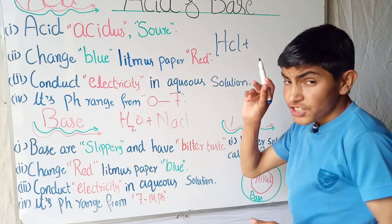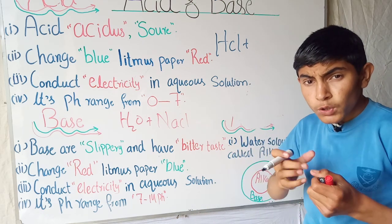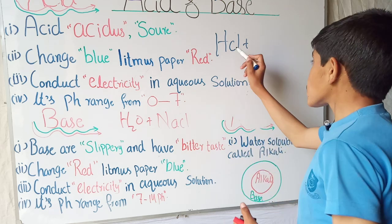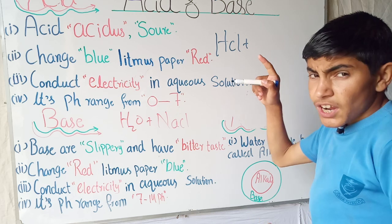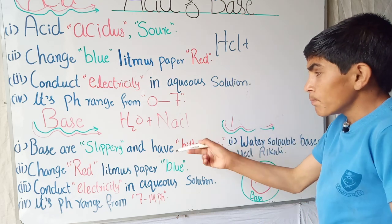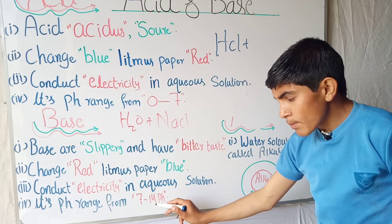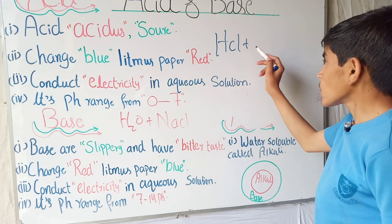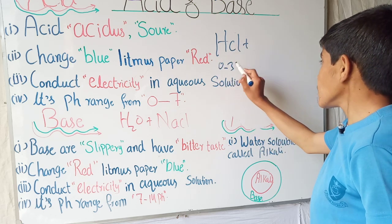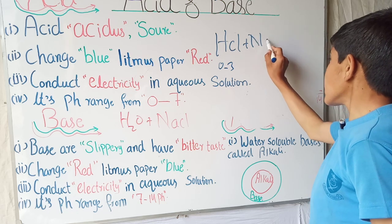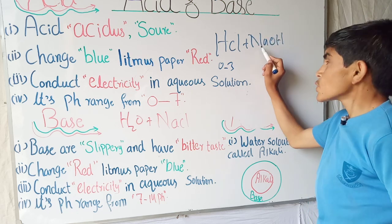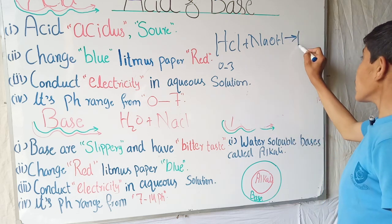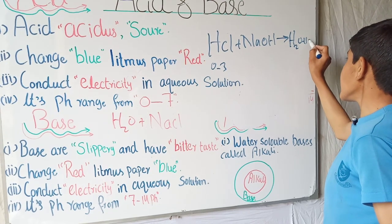When we add the strong acid HCl, which is the strongest acid and is present in our stomach to kill bacteria coming with food, and the strongest base NaOH, sodium hydroxide, with pH about 13 to 14, while HCl is 0 to 3, they give us two things: H2O and NaCl.